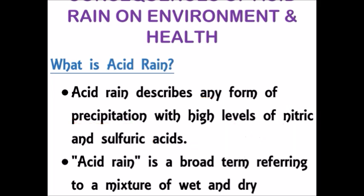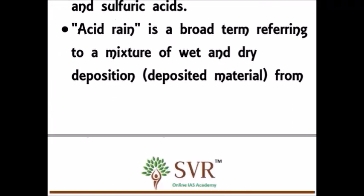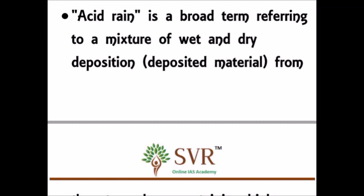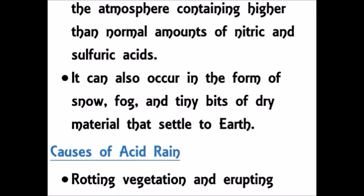We can also define acid rain in another way. Acid rain is a broader term referring to a mixture of wet and dry deposition from the atmosphere that contains higher levels of nitric acid and sulfuric acid.